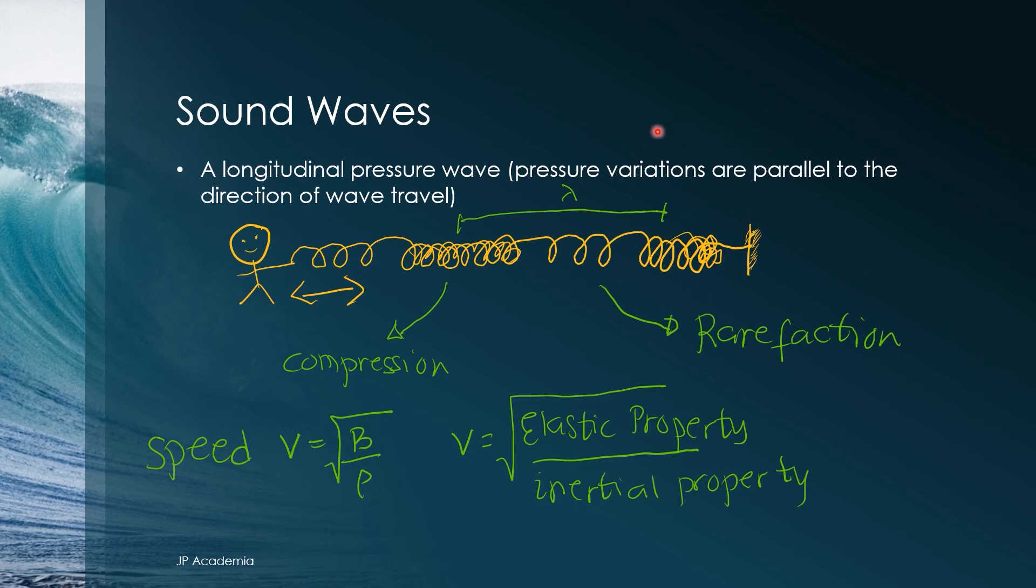The speed of the sound is expressed as the square root of the bulk modulus b and mass density rho of the medium. Generally, the velocity of mechanical waves is expressed as the square root of the elastic property over the inertial property.